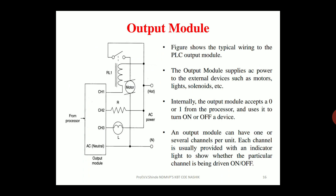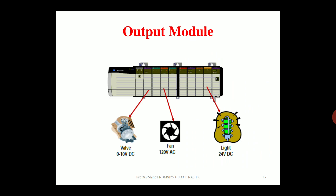Similar to the input module, there is also an output module. The output module supplies AC power to external devices such as motors, lights, fans, solenoids, etc. Internally, the output module accepts a 0 or 1 signal from the processor and uses it to turn on or off the device. An output module can have one or several channels per unit, and each channel is usually provided with an indicator light to show whether that particular channel is being driven on or off.